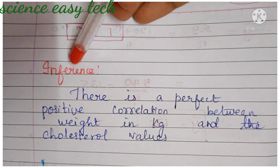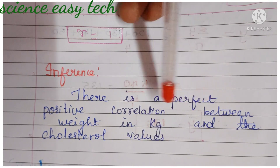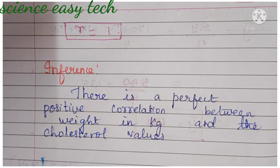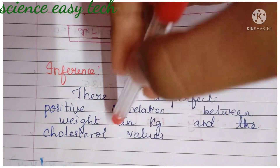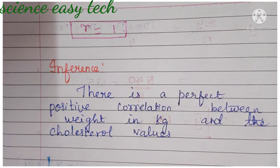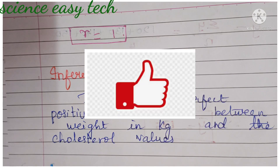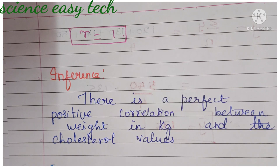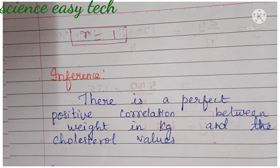So r = 1. The inference is: there is a perfect positive correlation between weight and cholesterol values. If weight increases, the cholesterol value also increases. Since r = 1, it indicates a perfect positive correlation between the two variables. Hope this video is clear. If you like the video, please give a thumbs up, share, and subscribe to Science Easy Tech channel. You can watch more videos in our statistics and nursing research playlist. Thank you, friends — keep supporting Science Easy Tech channel.